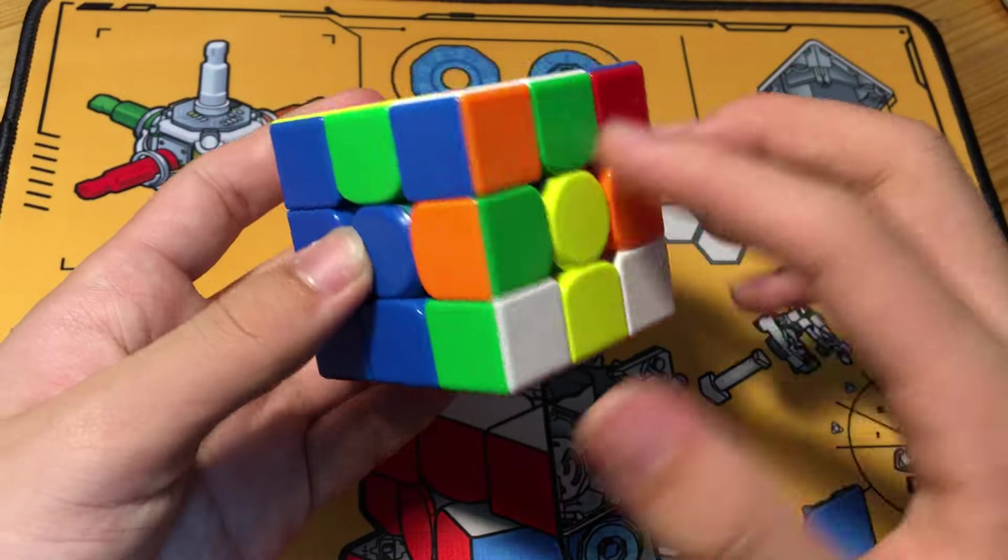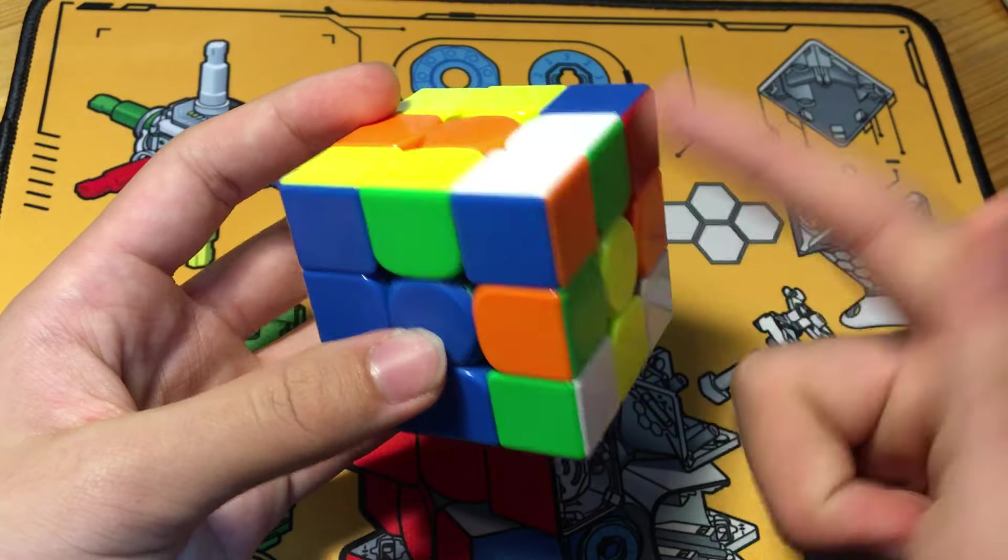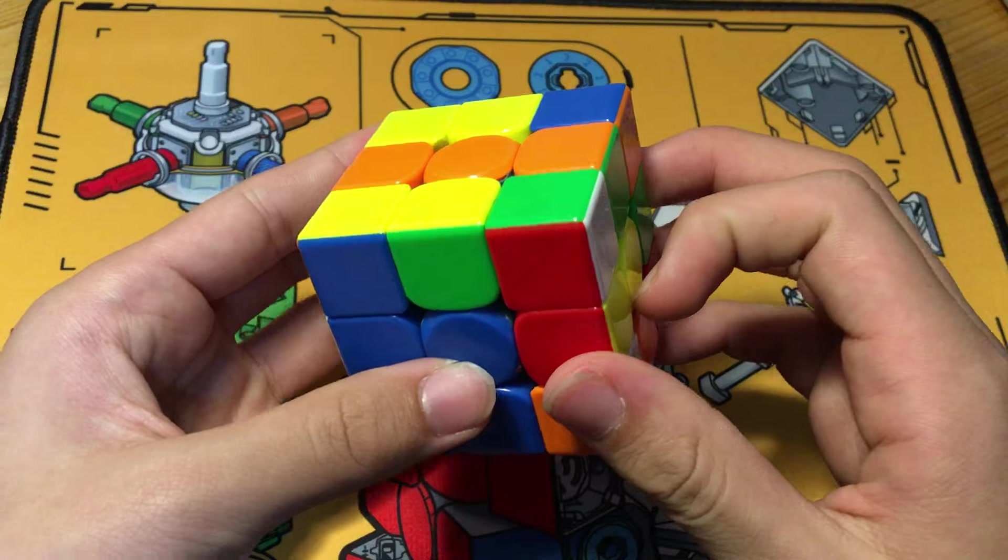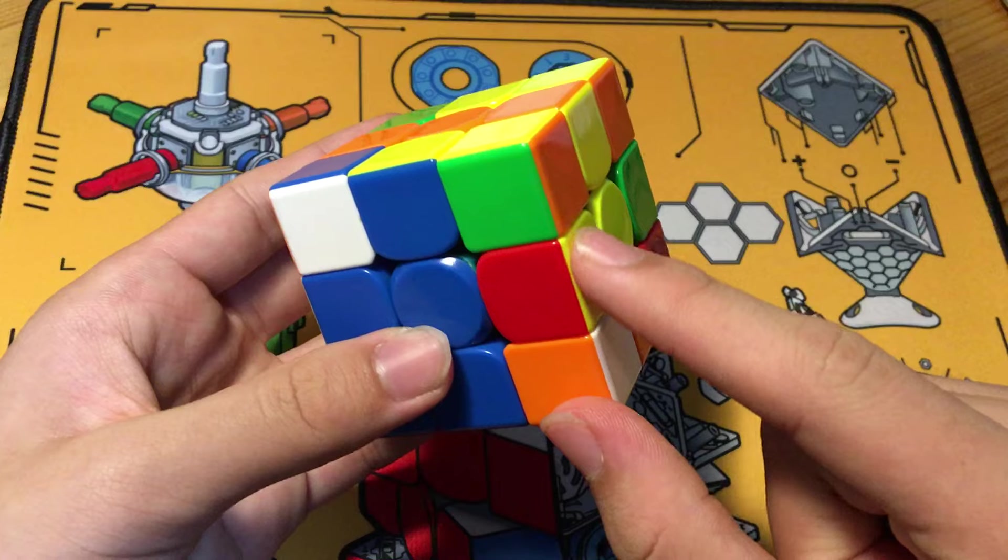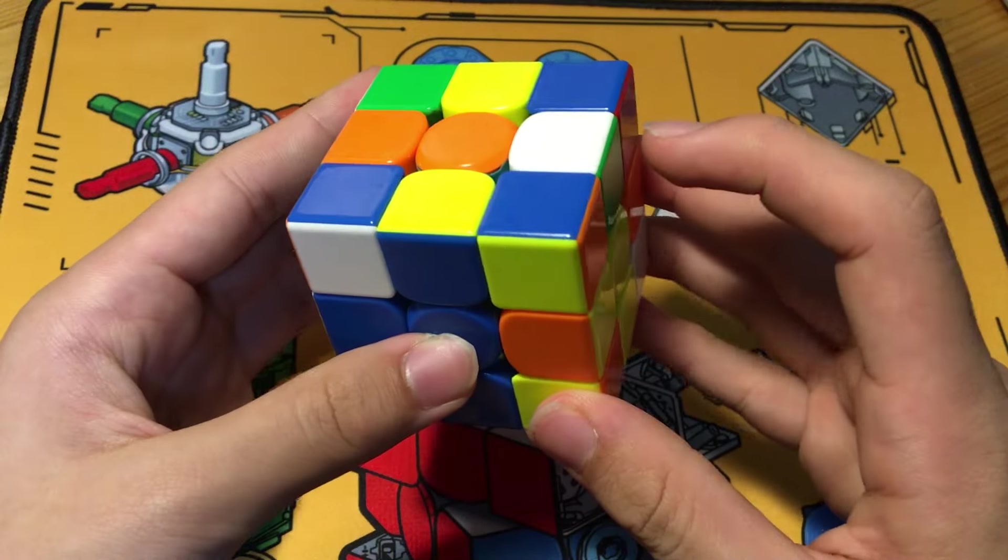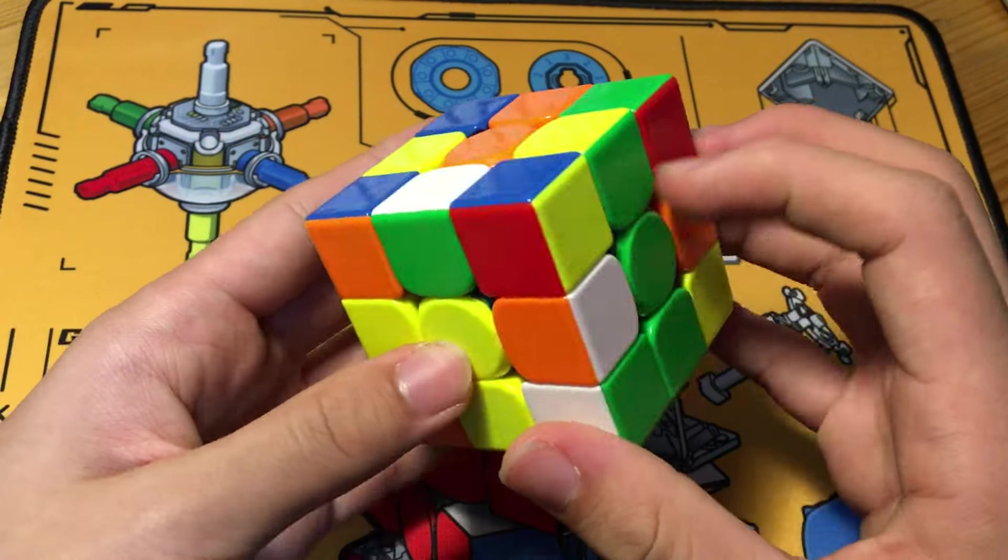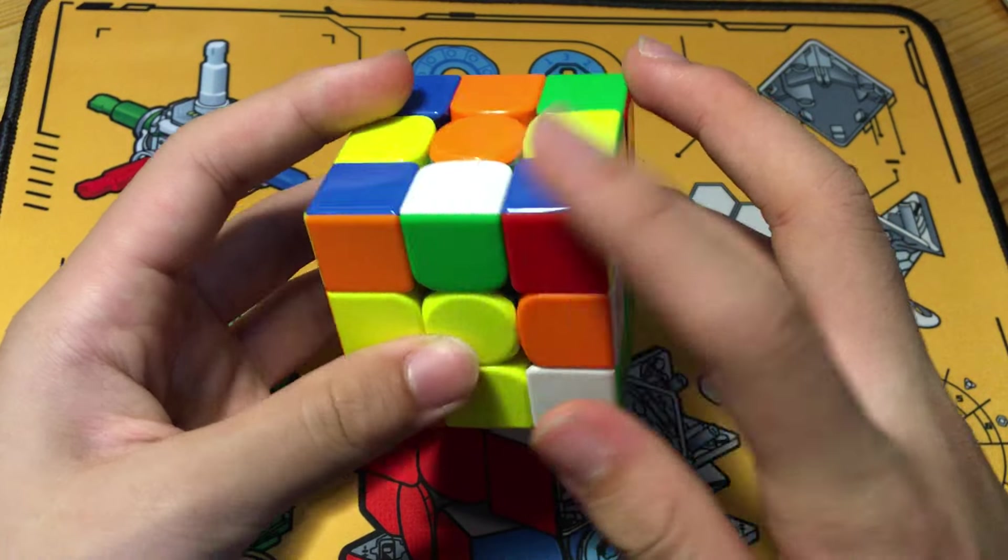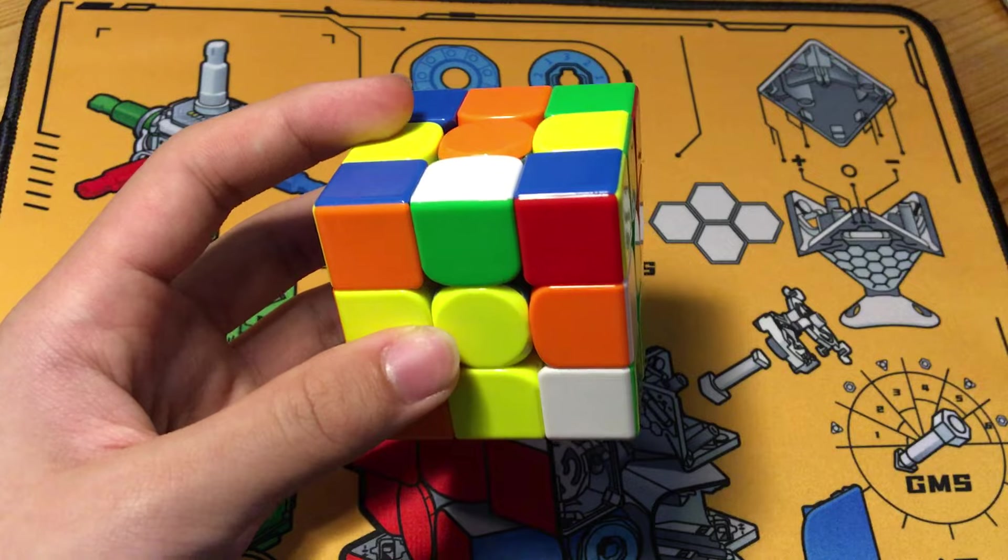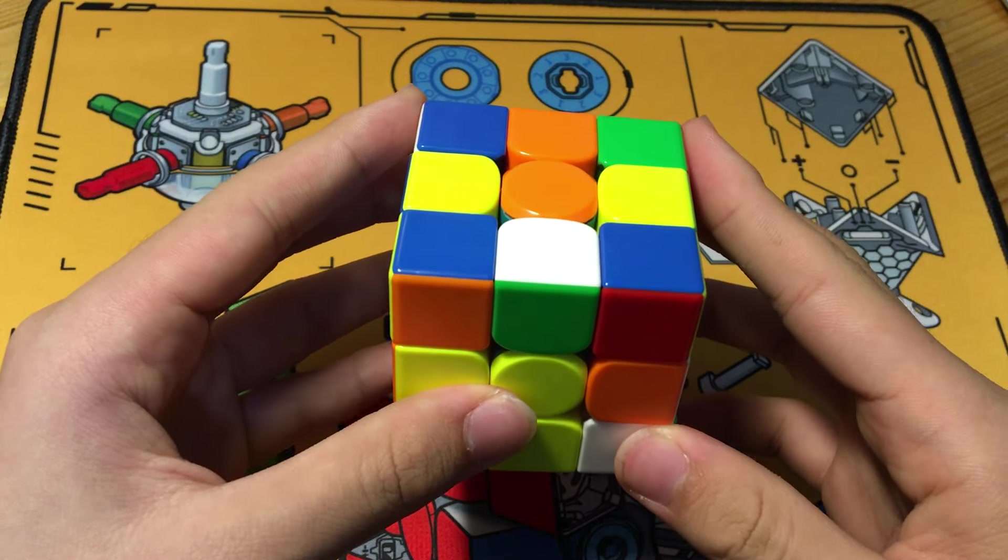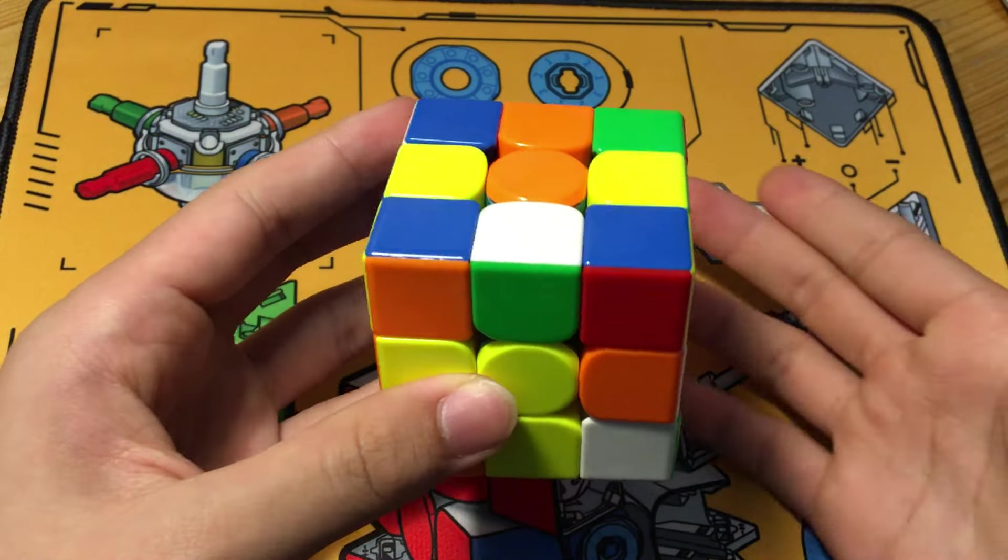And normally, we would just do R' and our second pair, by the way, would be these two, which is pretty bad. But what Timon does is inserting a U2 before solving this cross piece, so that after bringing down this edge, these will be a free pair. This is a very common technique in Timon's crosses, basically inserting one or two moves in the X-cross or cross to make the next pair easier to solve.